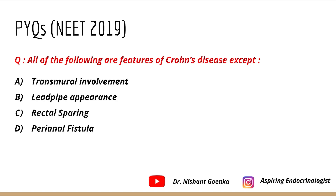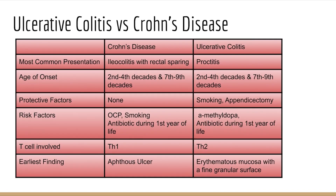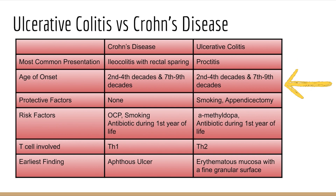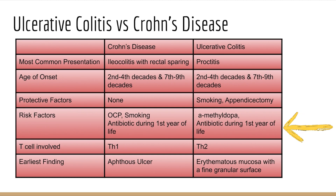We'll compare ulcerative colitis versus Crohn's disease. In Crohn's disease, the most common presentation is ileocolitis with rectal sparing, whereas in ulcerative colitis there is proctitis. Age of onset is similar in both. Protective factors: none for Crohn's disease; for ulcerative colitis, smoking and appendicectomy. Risk factors for Crohn's disease include OCP, smoking, and antibiotic use in the first year of life; for ulcerative colitis, alpha-methyldopa.